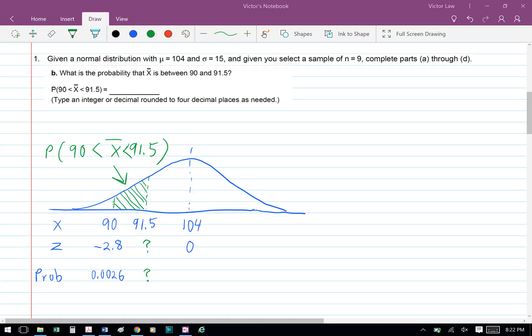Part B, what is the probability that x bar is between 90 and 91.5? In this question, we're looking for the area under the curve as shown in the graph.